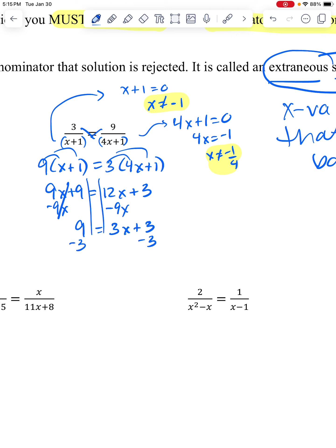Now I have nine equals three x plus three. I take that away. I have three x is going to equal six. When I divide by three, I get that x is two. I look up here.